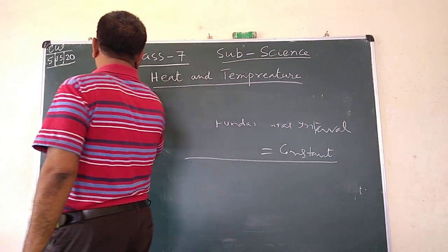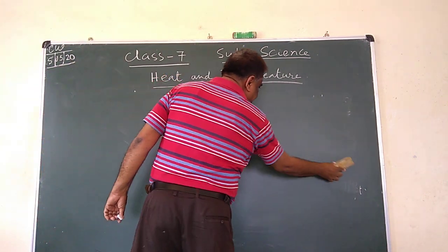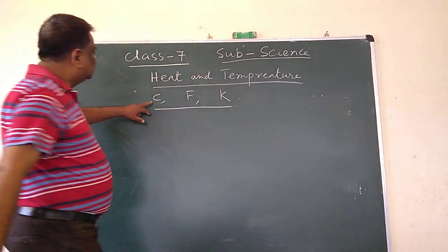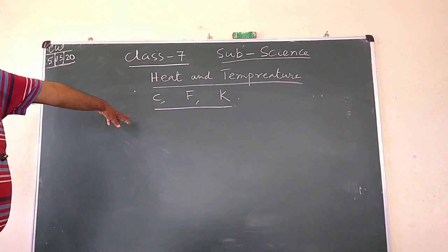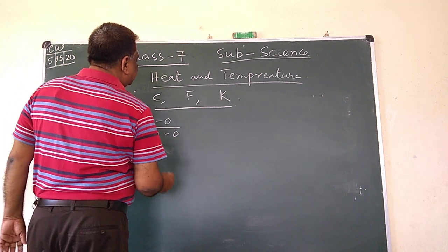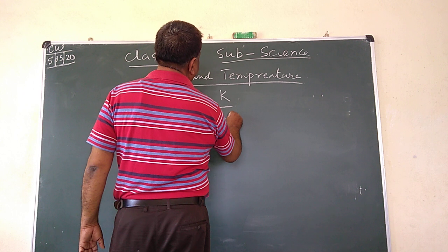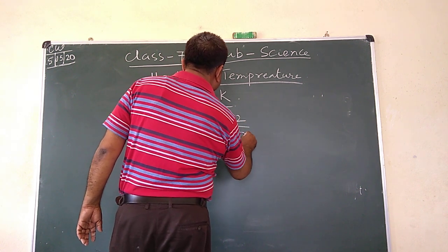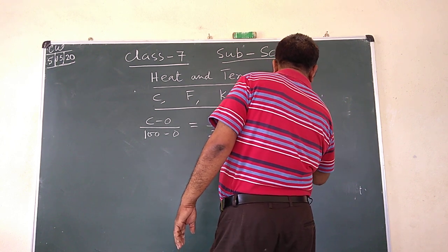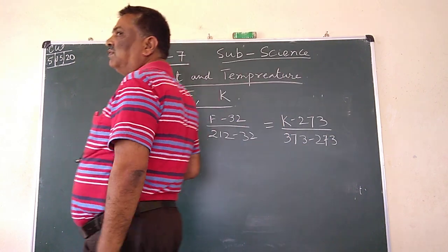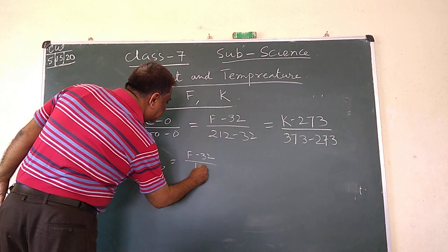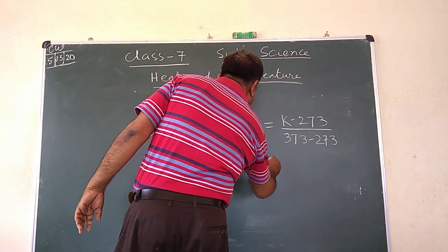Let us consider the temperature on Celsius thermometer as C, Fahrenheit as F, and Kelvin as K. For Celsius: C minus 0, divided by 100 minus 0. For Fahrenheit: F minus 32, divided by 212 minus 32. For Kelvin: K minus 273, divided by 373 minus 273. This gives us C by 100 equals F minus 32 by 180, equals K minus 273 by 100.